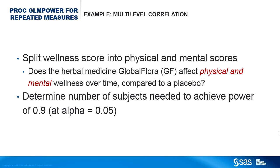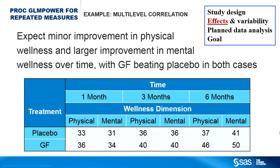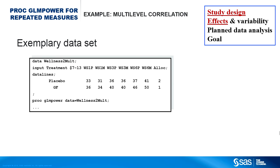Now suppose you are planning a follow-up study on the GlobaFlora herbal medicine. Your company has created an improved wellness scoring system, separating the wellness score into two dimensions: physical and mental. Your boss wants to know how this new scoring system affects the sample size for a study similar to the previous one. Your goal is the same — to determine the required sample size to achieve a power of at least 0.9. The planned design is the same as before, except you will measure both physical and mental wellness scores, with greater improvement expected in mental wellness and greater improvement with GF than with placebo. You now have six response variables spanning three time points and two wellness dimensions.